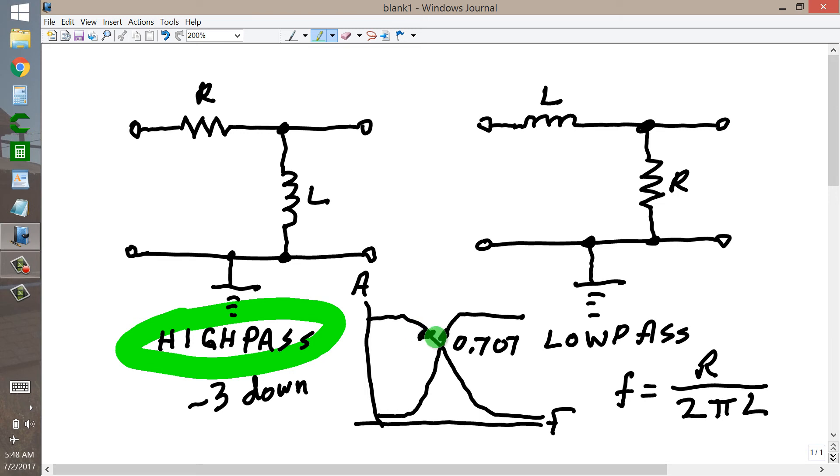When the signal reaches the cutoff frequency, then you are 3 decibels down. And beyond that, as the frequency continues to increase, this inductor chokes off more and more of the signal until at frequencies well up into this range, hardly any of the signal gets through to the output.